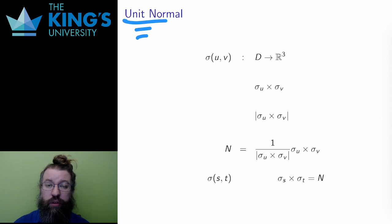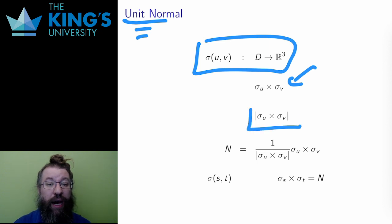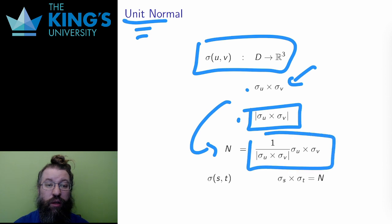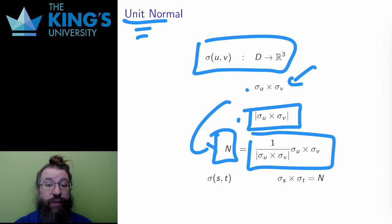The normal is the perpendicular direction to a surface. Its length as a vector depends on the parameterization, how fast the variables u and v are changing over the surface. However, if I divide by that length, as I can do for any vector, I get a vector of length 1, and this is the unit normal. This is what I need to define the interaction between a surface and a field.